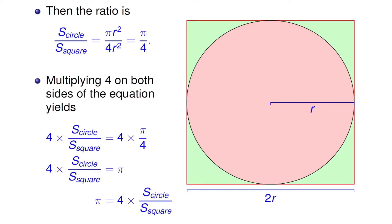If we multiply 4 on both sides of the equation, then we get 4 times S_circle over S_square equals 4 times pi over 4. Now 4 and 4 cancel out, so we have 4 times S_circle over S_square equals pi. That is, pi equals 4 times the area of the circle over the area of the square.